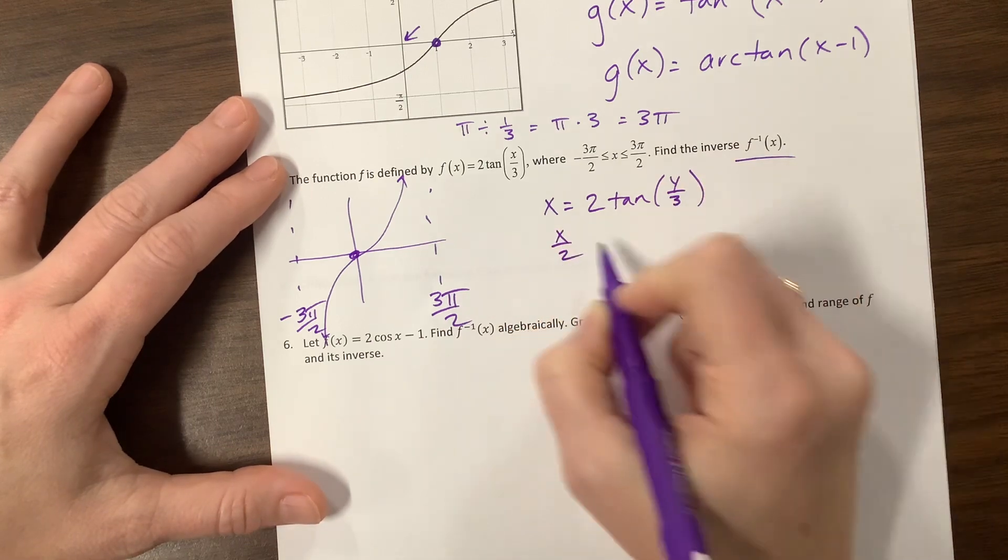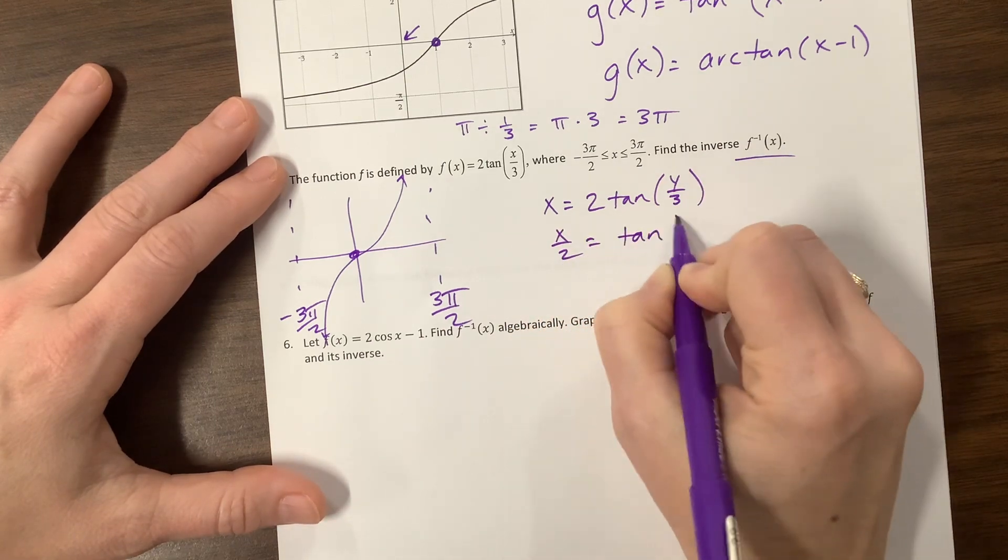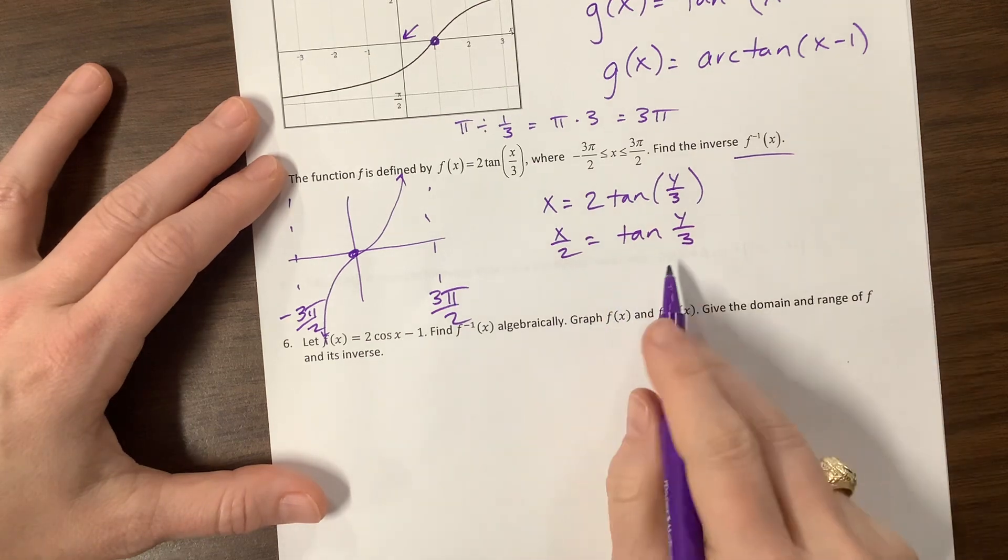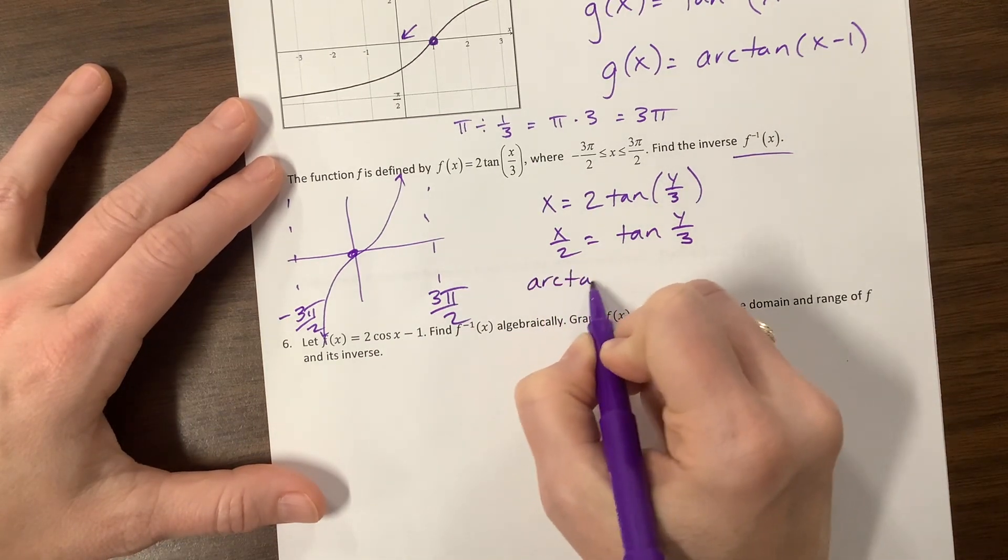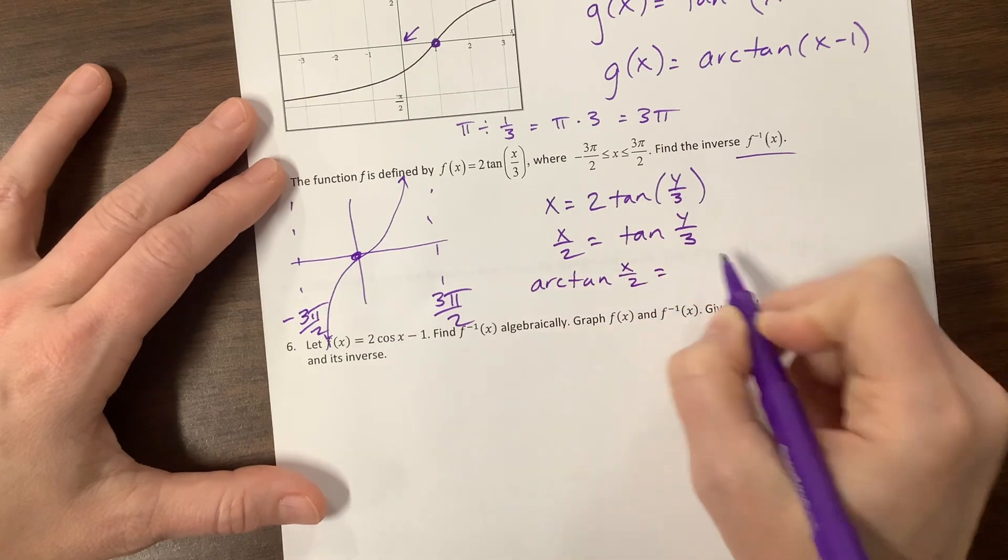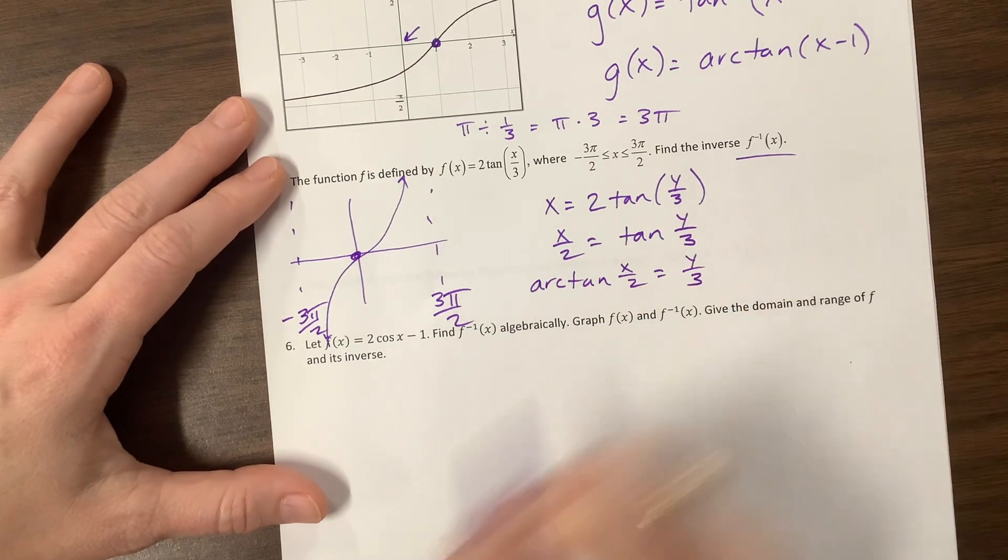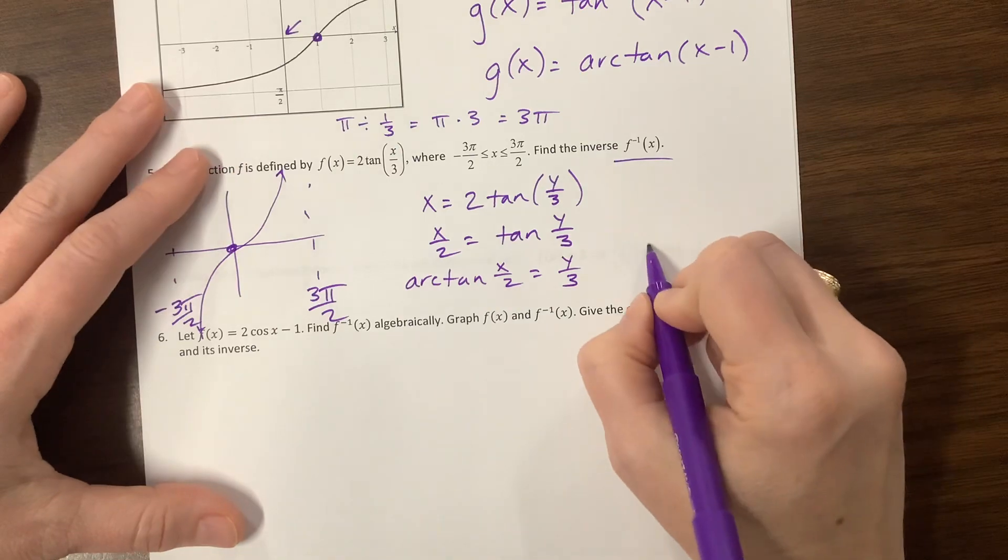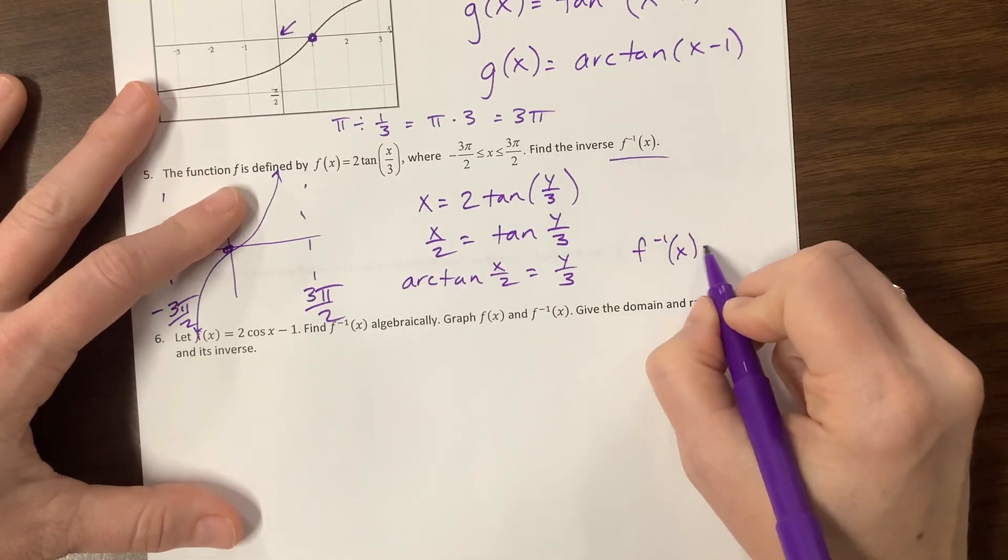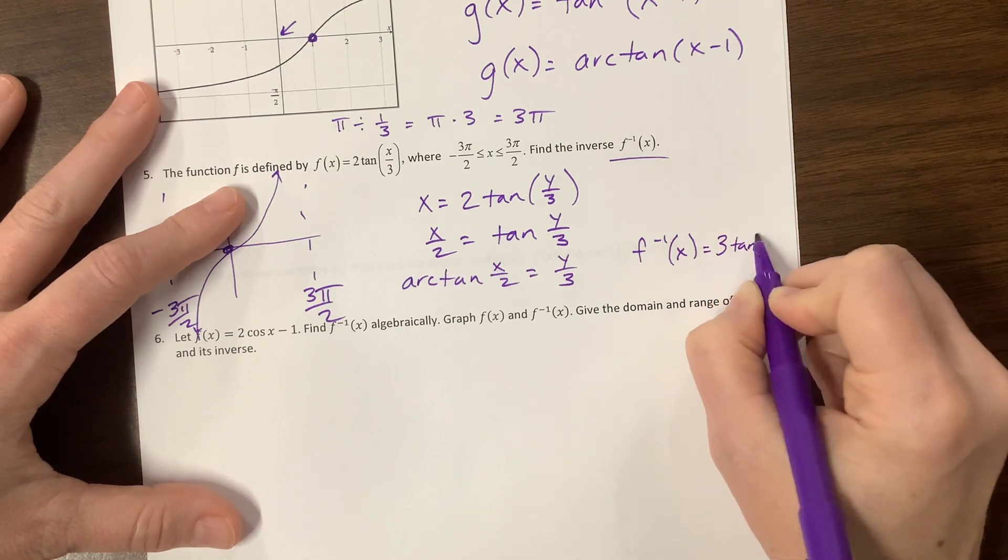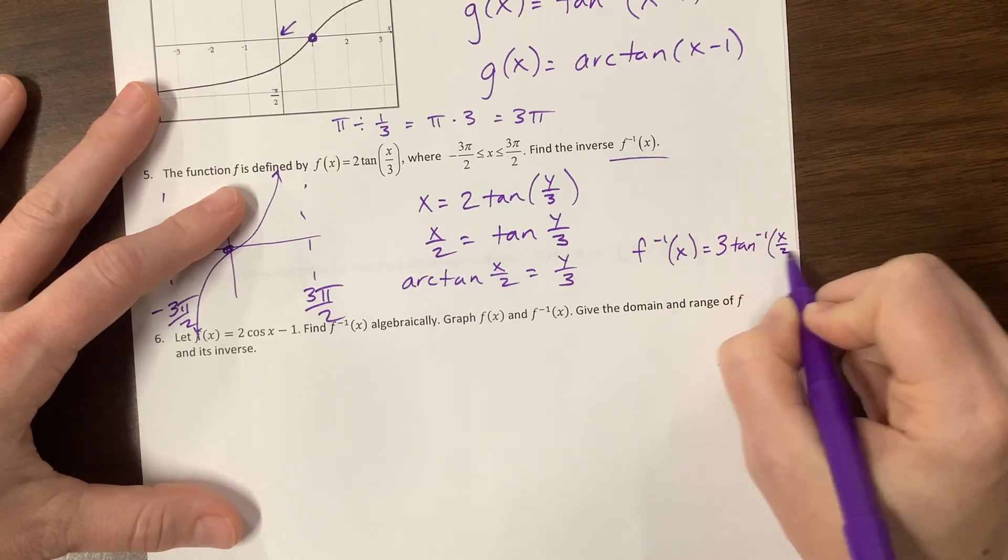Take the inverse tangent, so undo both sides, or take the arctan. I just felt like writing arctan. Is equal to arctan of that just gives me y over 3, and now I have to get rid of the 3. And so the inverse tangent, f to the negative 1 of x, so I'm using their notation, is equal to, I didn't give myself enough space, 3 tangent to the negative 1 of x over 2.